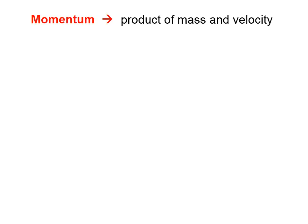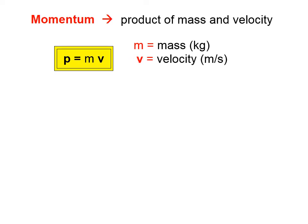Momentum, in fact, is the product of mass and velocity. Momentum, symbolized by lowercase p, because m was already taken by mass, is the product of mass times velocity.